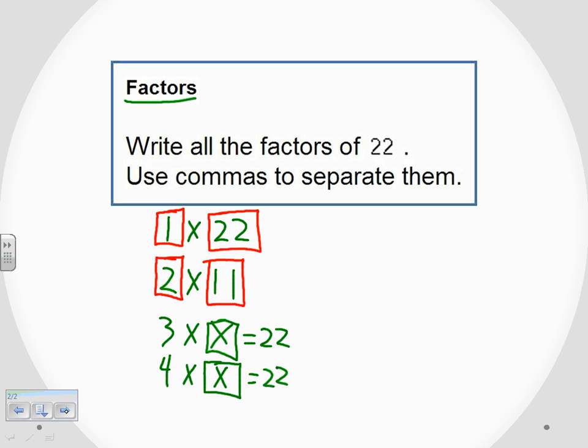I keep trying because I'm persistent. So I'm going to try 5, and I say, okay, is there a number I can multiply 5 by to give me 22? And again, no luck. 5 times 4 gives me 20, 5 times 5 gives me 25, but there's no number that will give me 22. So the 5 doesn't work.